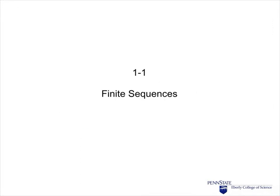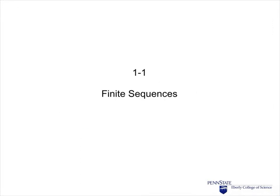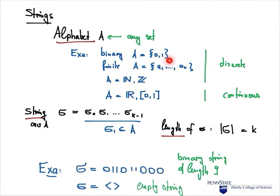Let's start with finite sequences. In our context, finite sequences are usually called strings. A string is always defined over some alphabet, which we denote by A. An alphabet can be pretty much any set, but usually for us it will be the binary alphabet — that's the most important case, where A is just the set containing 0 and 1. Or more generally, we look at finite alphabets, where we just have finitely many symbols.